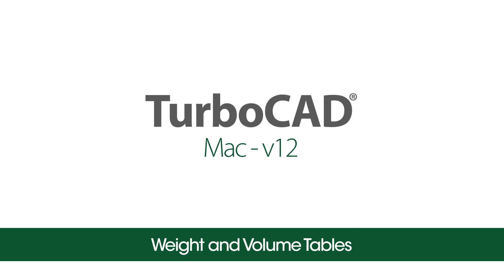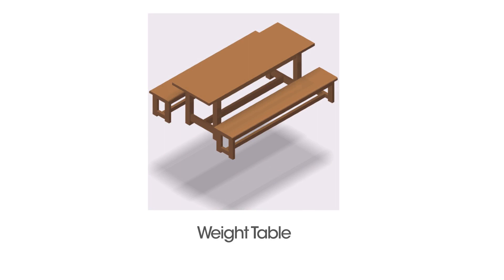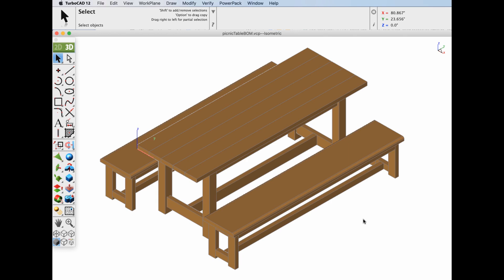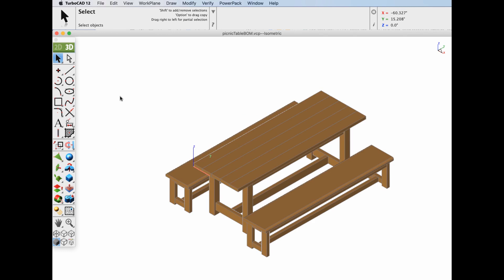In this video we show how to calculate a weight table using just two tools: the Properties tool, applying a material property to an object, and the Bill of Materials Attributes dialog box. The first thing we need to do to create a weight table is apply properties to each of the items in the weight table.